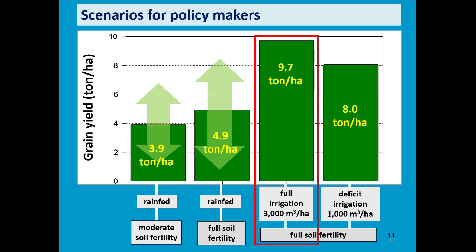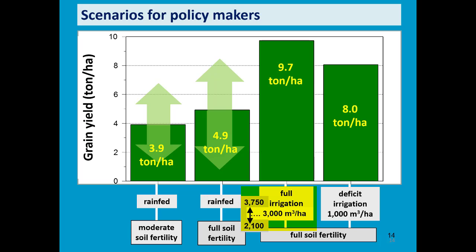With irrigation, production can rise to close to 10 tons per hectare. The net irrigation requirements are on average 3,000 cubic meters per hectare, but in a dry year it will increase to close to 4,000 cubic meters per hectare, while in a wet year it drops to 2,000 cubic meters per hectare.